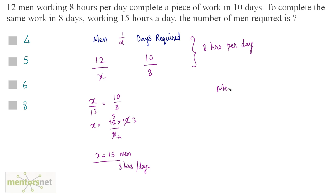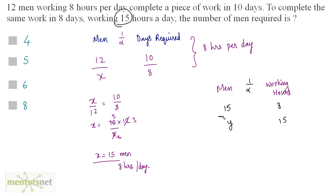Now we consider men and working hours. If you increase the number of men, the number of working hours can be reduced — and vice versa. So these are inversely proportional. We have 15 men working for 8 hours. We want how many men are needed if they work for 15 hours. Since it is inversely proportional: Y divided by 15 equals 8 divided by 15, so 15 cancels out and Y equals 8. The number of men who complete the same work in 8 days working 15 hours a day is 8.